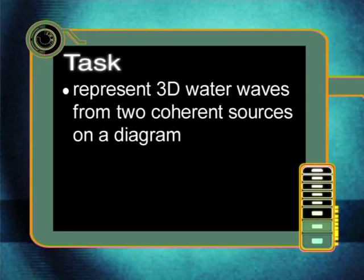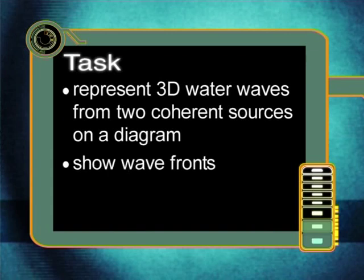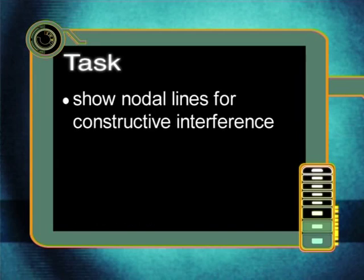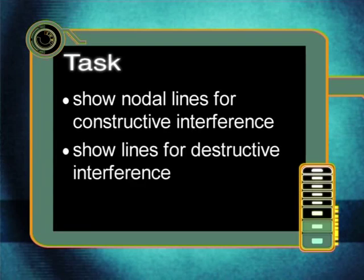To summarize your task: represent the water waves formed by two coherent sources on a diagram, show the wave fronts radiating outwards, make sure that the wavelength is consistent between the wave fronts, identify the nodal lines which show constructive interference, and identify the lines showing destructive interference.